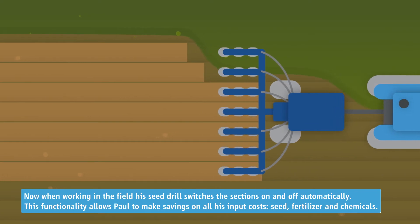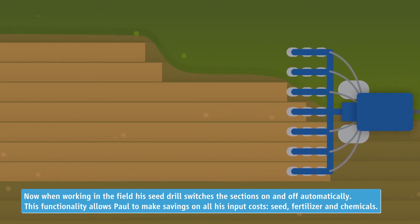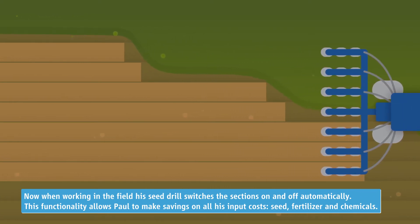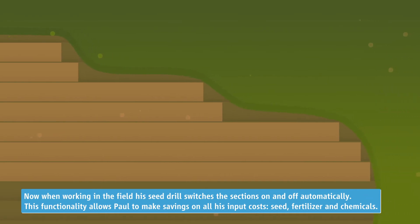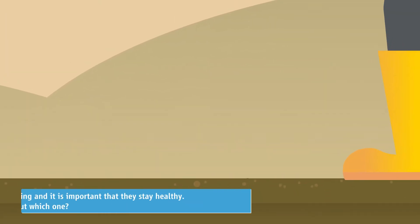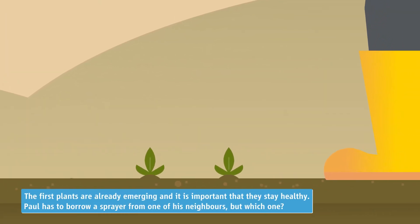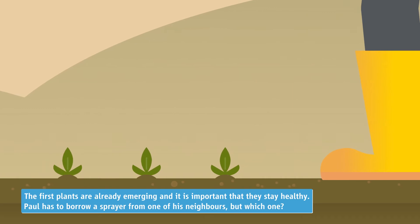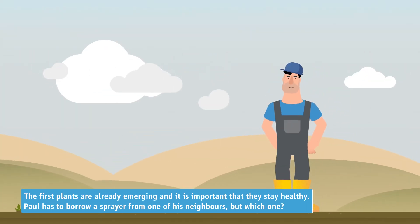This functionality allows Paul to make savings on all his input costs — seed, fertilizer and chemicals. The first plants are already emerging, and it is important that they stay healthy. Paul has to borrow a sprayer from one of his neighbors. But which one?